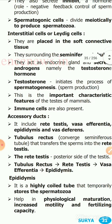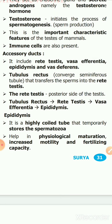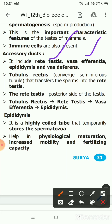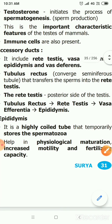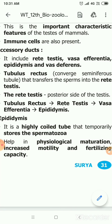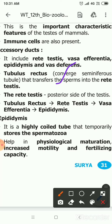For the accessory ducts, you must compulsorily draw the testes diagram. The accessory duct consists of tubuli recti, rete testes, vasa efferentia, epididymis, and vas deferens. The sperm is transferred from the seminiferous tubules to the tubuli recti, and then to the rete testes, which is located at the posterior part of the testes.